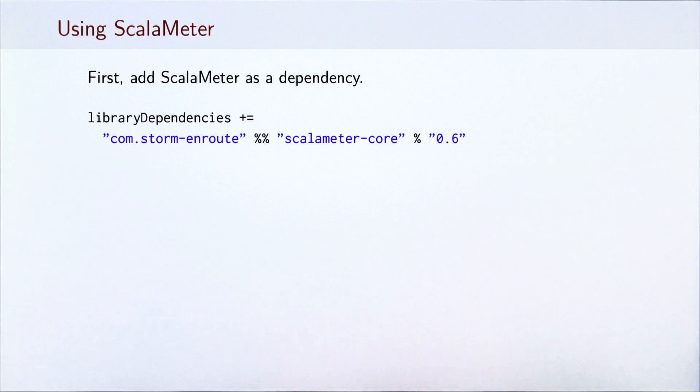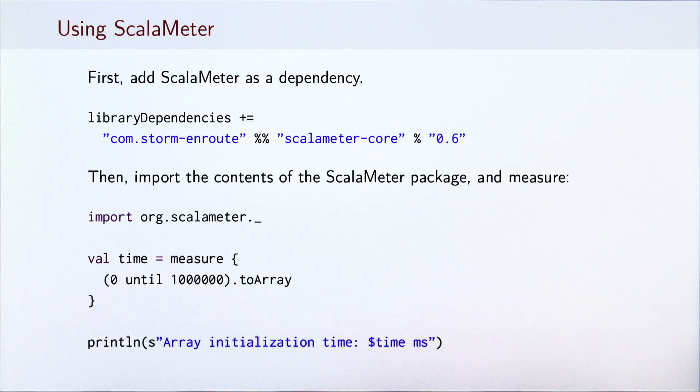To start using Scalameter, we need to add it as a library dependency to our SBT project. We do this as follows. After that, we only need to import the Scalameter package and use the measure method to get the running time of a code snippet. In Scalameter 0.6 version, this method returns a double value for the running time. In this snippet, we measure the time required to convert a range of 1 million integers into an array. Finally, we print the array initialization time.